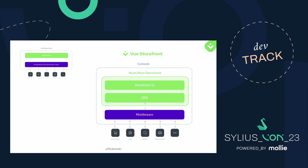Here we have an example of this architecture in Vue Storefront. As I said, we are a set of developer tools. Headless architecture requires you to have different tools for different use cases. In Vue Storefront, our storefront is built from two layers. One is Storefront UI — a UI library that allows you to build interfaces in a very intuitive and consistent way. The other is the SDK, which allows you to easily communicate with the middleware — our integration and orchestration layer.